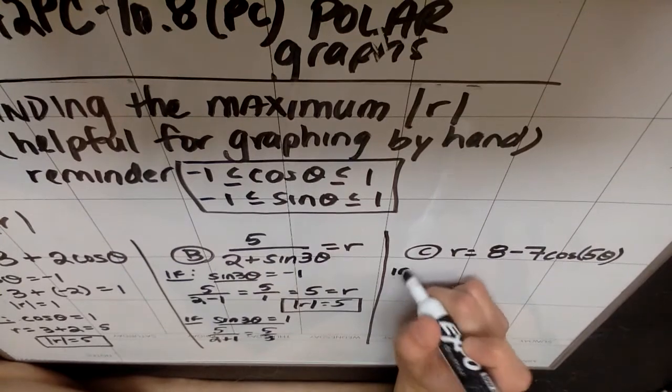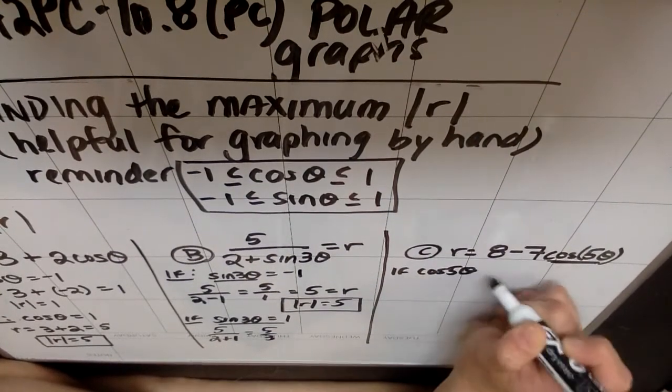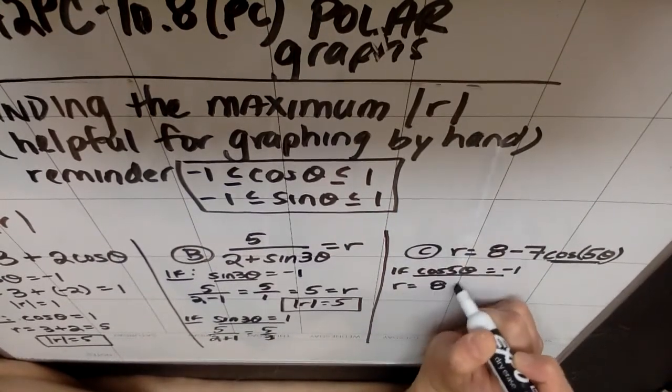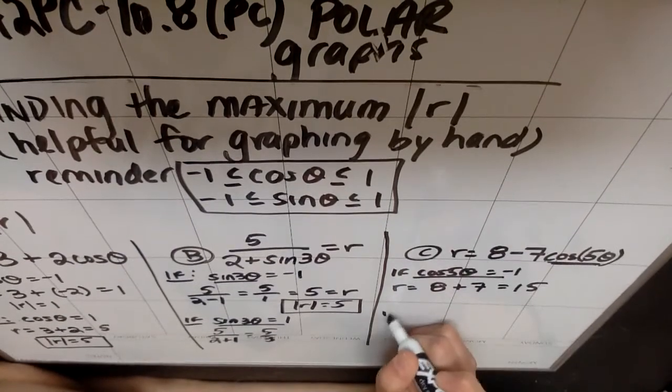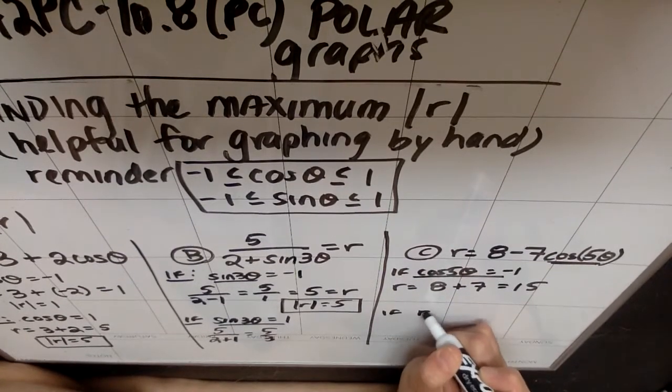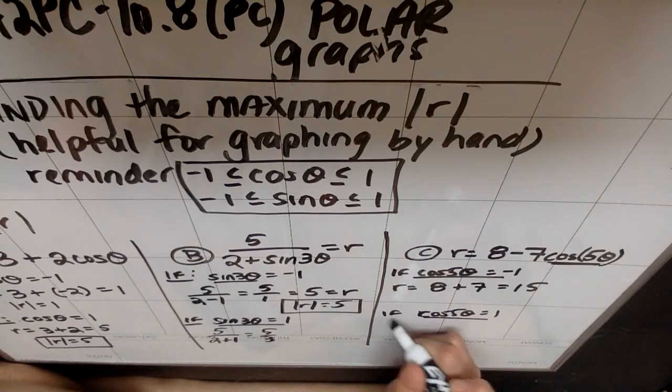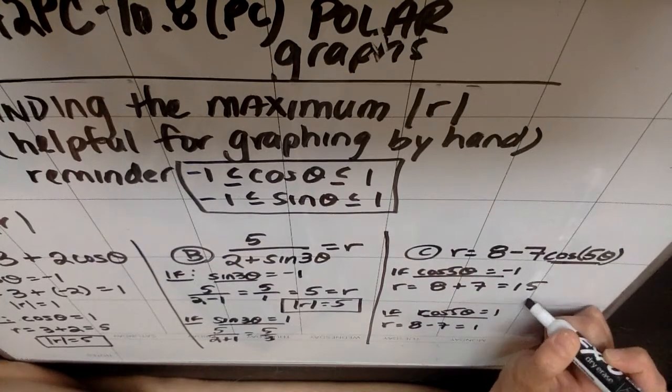In the third one, if I try making my trig function, which is cosine of 5 theta equal to negative 1, then my r is going to be 8 plus 7, because it's negative 7 times negative 1, so I get 15. If my cosine of 5 theta is a positive 1, which is the other extreme version of it, then my r would be 8 minus 7, which is 1. So the absolute value of r is 15, would be my largest possible radius.